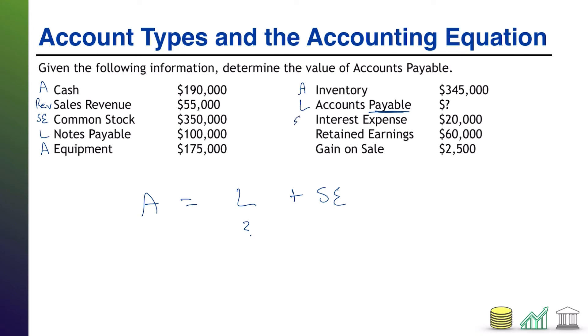Interest expense gives itself away. That's an expense. That goes on the income statement. That's not part of A, L and SE. Retained earnings belong to the shareholders. So that's part of stockholder's equity. And then gain on sale. Gain is just another word representing a revenue. It's just a special type of revenue. And so that goes on the income statement as well. That's not part of A, L or SE.